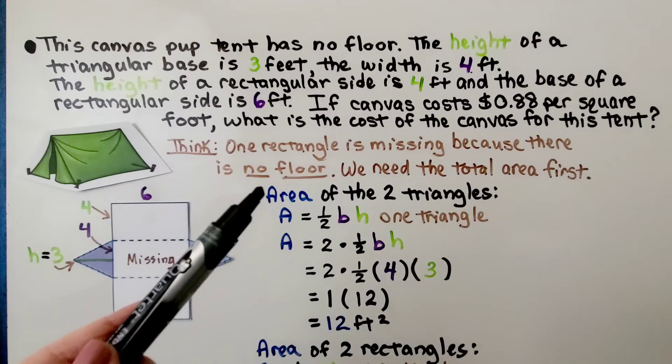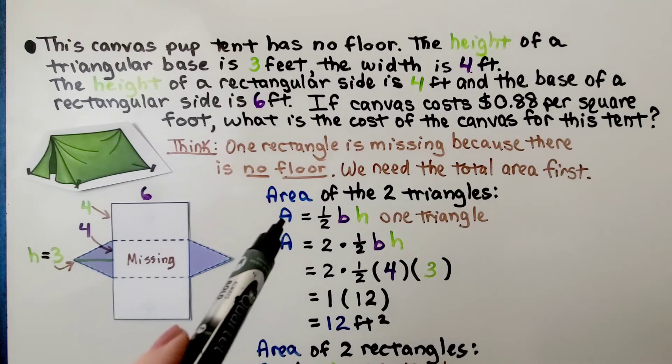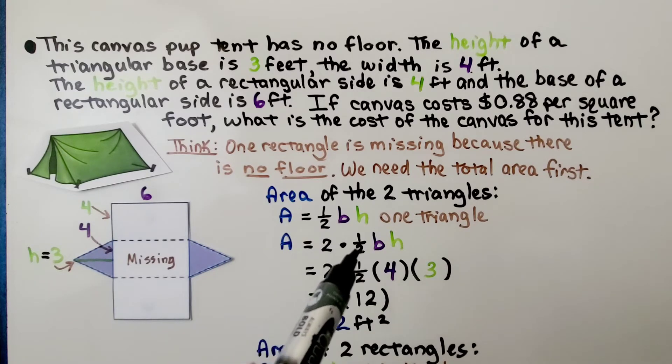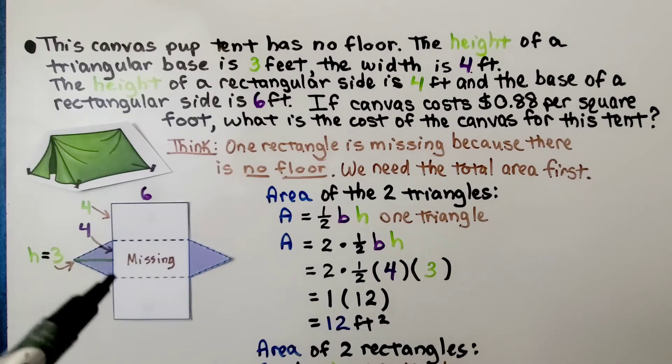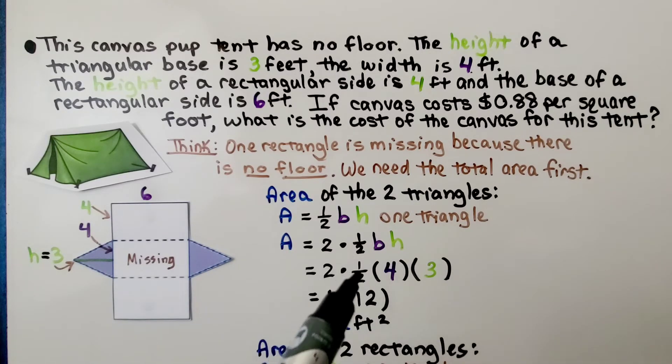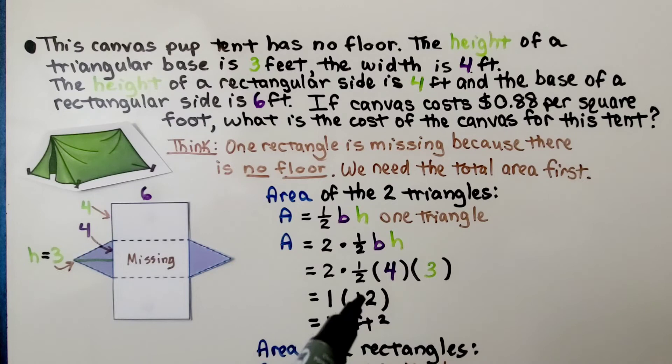We have two triangles, one on each side, and the area of the two triangles, well, one triangle is half times the base times the height. We have two of them, so we're going to do 2 times 1/2 times the base times the height, and the base is 4, and the height is 3, so we have 2 times 1/2 times 4 times 3. Two times a half, that's two halves, that makes one whole, and 4 times 3 is 12. We have 1 times 12. That is 12 feet squared for the two triangles.